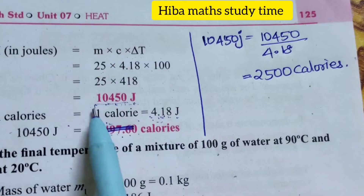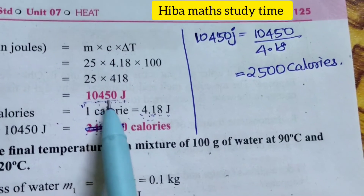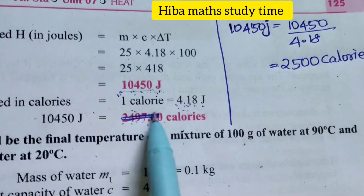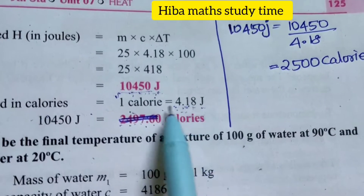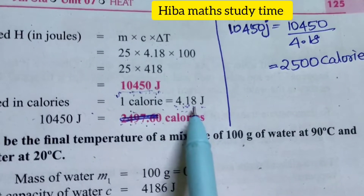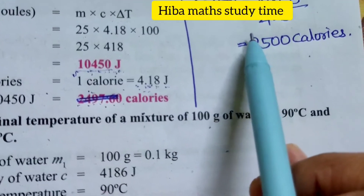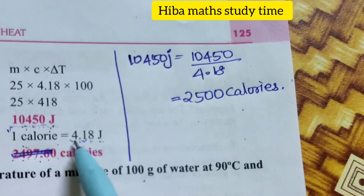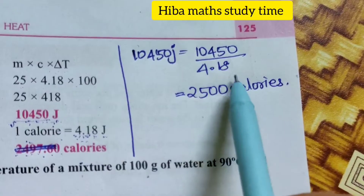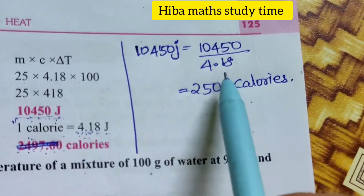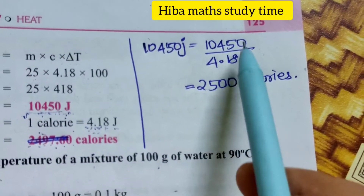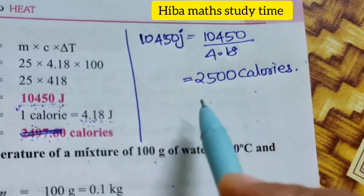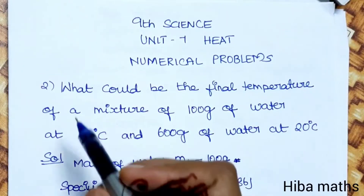We need the answer in calories. Since 1 calorie is equal to 4.18 joules, we convert 10,450 joules by dividing by 4.18 joules, giving us 2,500 calories.